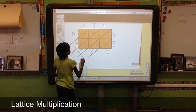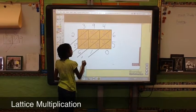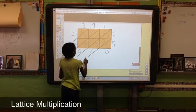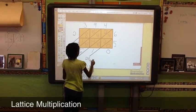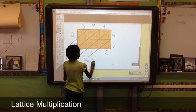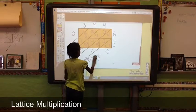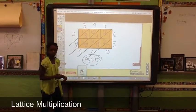So then the product of 394 times 65 is 25,610.